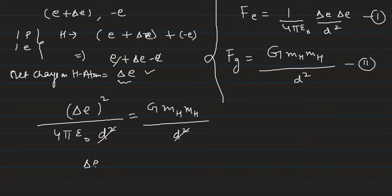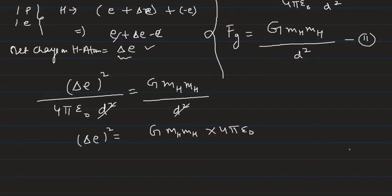Here we will find out (Δe)². That is G × mH × mH multiplied by 4πε₀. So we will substitute these values.